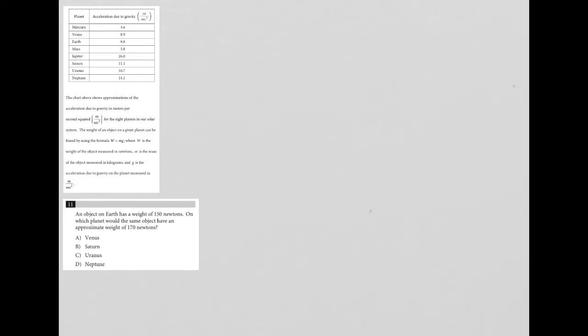This question, question 11, is based upon the table provided in the test up above question 10. We're also given this formula here for weight, which I will write down. So W equals mg, where W stands for weight in newtons, M is the mass in kilograms, and G is the acceleration due to gravity, which again is exactly what we see here in this column, which means this is really a G column here.